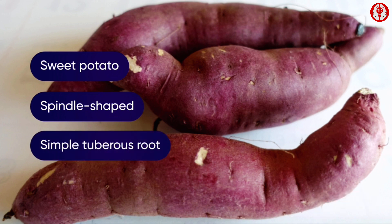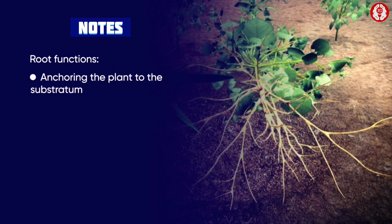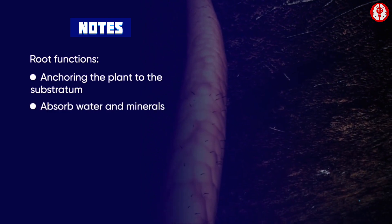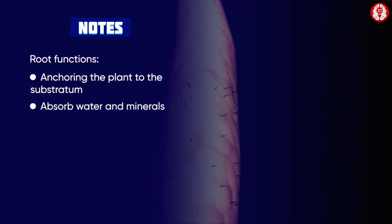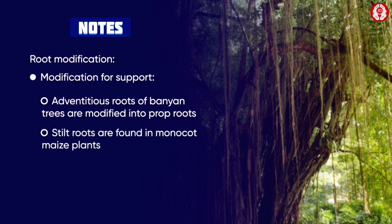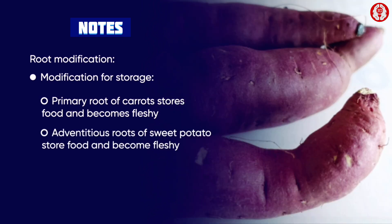In summary: roots perform the mechanical function of anchoring the plant to the substratum and absorb water and dissolved minerals. Adventitious roots of banyan trees are modified into prop roots; stilt roots are modified roots found in monocot maize plants. The primary root of carrots stores food and becomes fleshy, while adventitious roots of sweet potato store food and become fleshy.